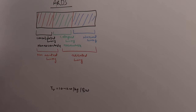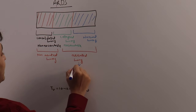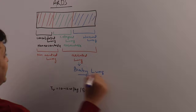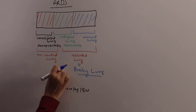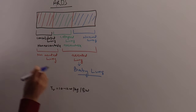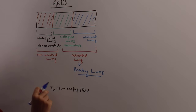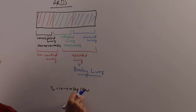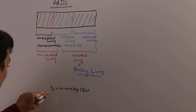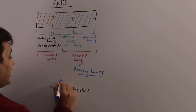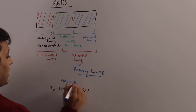But in an ARDS patient, the actually functioning lung is less. This is called the baby lung. The whole lung — the aerated lung — is the smaller part or a subunit of the total lung, and that is called the baby lung. So if you give a tidal volume of 10 to 12 ml per kg of body weight, because this is non-aerated lung, the tidal volume will preferentially go to the baby lung.